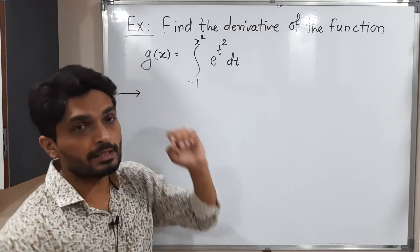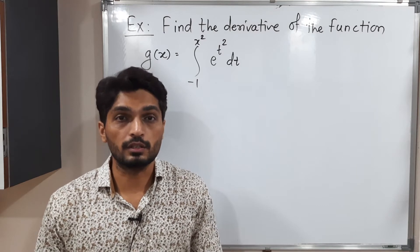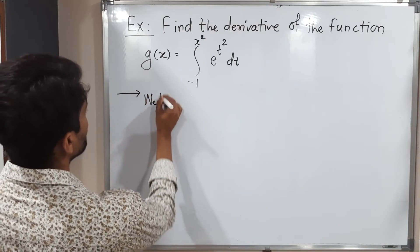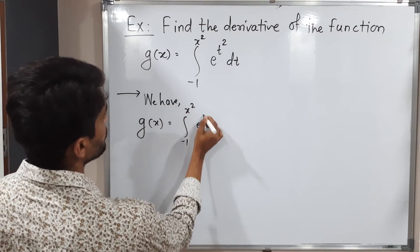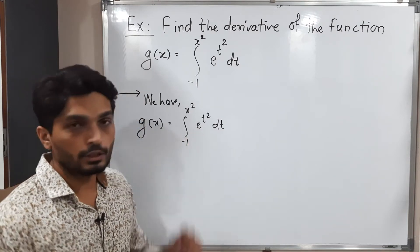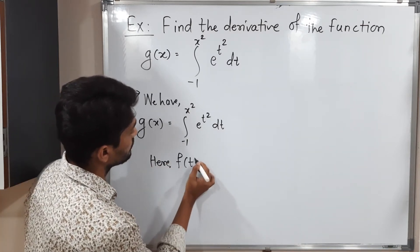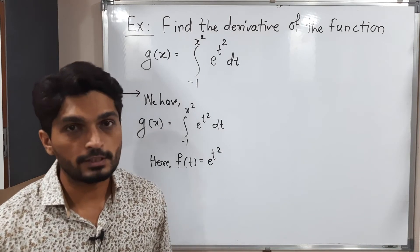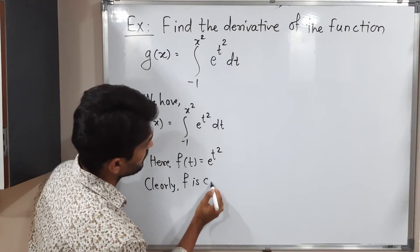In the previous example the upper limit was simply x, but here we have x square. Because of that square the total technique is different. We have g of x equal to integration from minus 1 to x square of e raised to t square dt. The function inside the integration is e raised to t square, so f of t is e raised to t square. This is an exponential function, so it is continuous. Clearly f is a continuous function.